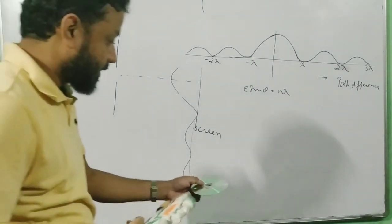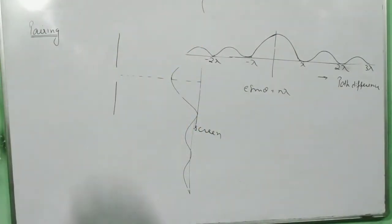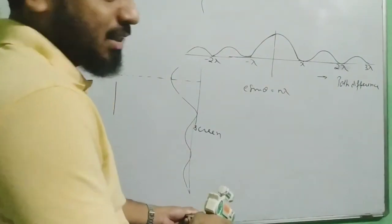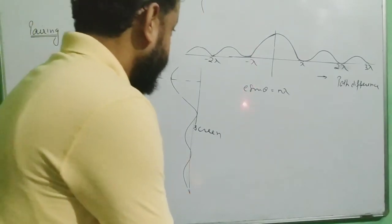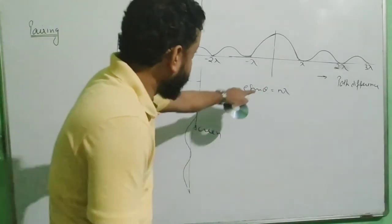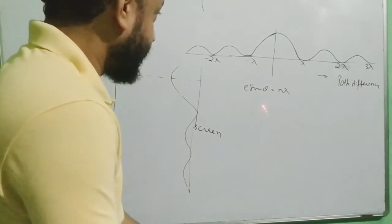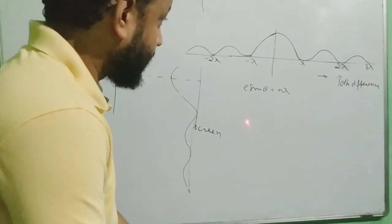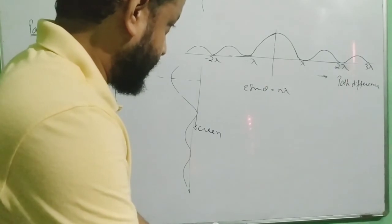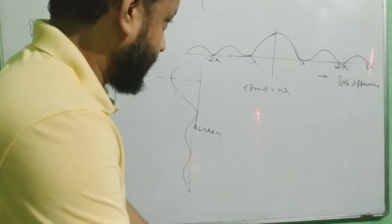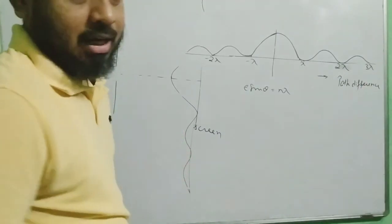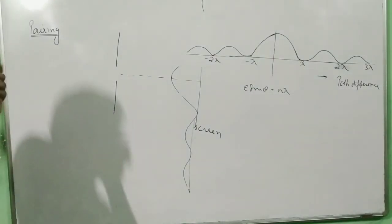Looking at the pattern again, you can see that the middle central maxima is the brightest one, and it is also the thickest — it is wider than all the other maxima. The secondary maxima on either side are progressively smaller in both intensity and width.